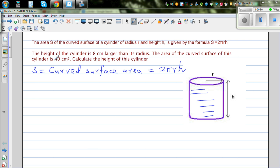The height of the cylinder is 8 cm larger than its radius. So this is your height and this is your radius. Height is given to be r plus 8 cm. The area of the curved surface of this cylinder is 40 cm squared.